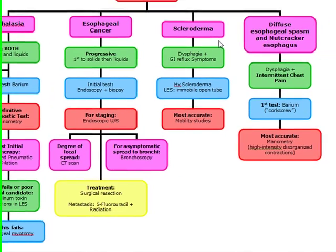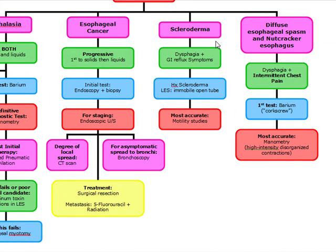Scleroderma is pretty easy because it's going to be the only one on your test that presents with dysphagia plus GI reflux symptoms. So if they come in with dysphagia plus GERD-type symptoms, think scleroderma. In scleroderma, we're going to see an immobile open tube, and the most accurate test is going to be motility studies. Treatment is with proton pump inhibitors.